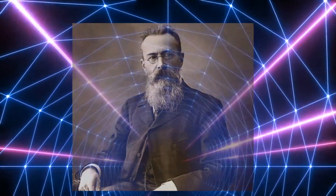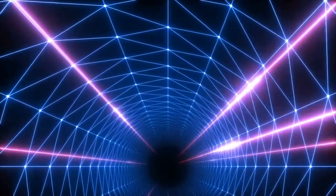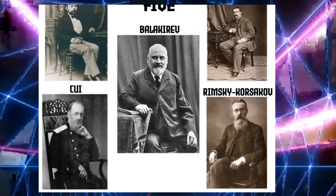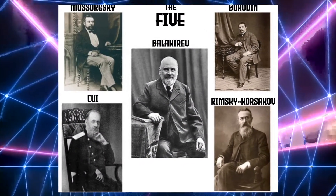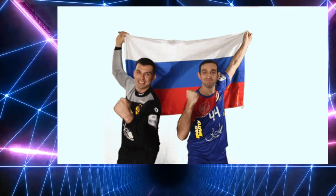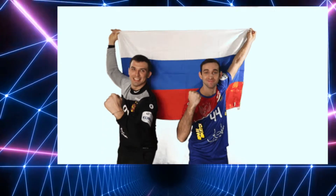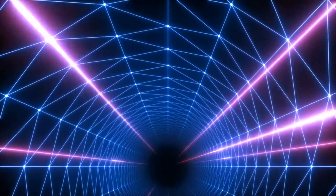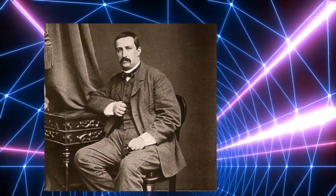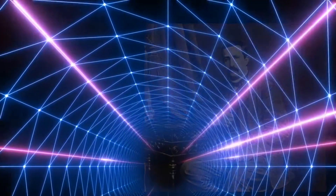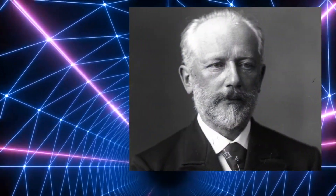Nikolai Rimsky-Korsakov is a famous member of the Five, a group of Russian composers in the mid-19th century who strove to establish a Russian classical music style. The group included other composers like Madis Mazursky and Alexander Borodin, and Rimsky-Korsakov was also an acquaintance of Tchaikovsky as well.